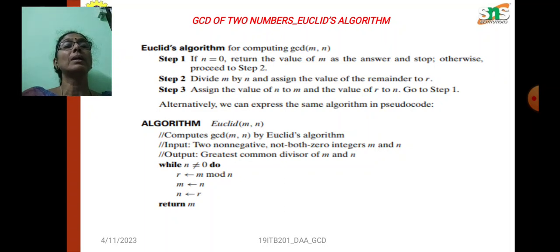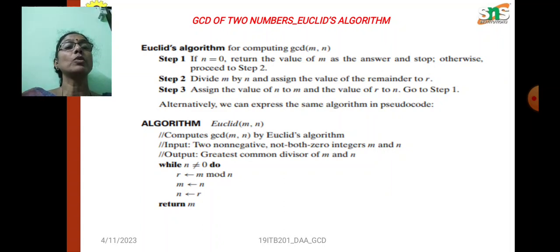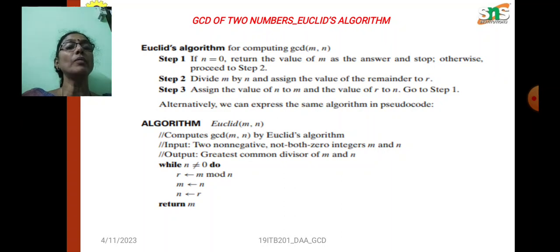This is the algorithm and procedure to calculate the Euclid GCD. The lower part is the pseudocode of this algorithm. The algorithm name and parameters to be passed are specified first, followed by the problem description: computing the GCD of m and n by Euclid's algorithm. The input is two non-negative, not both zero, integers m and n. The output is the greatest common divisor of m and n.